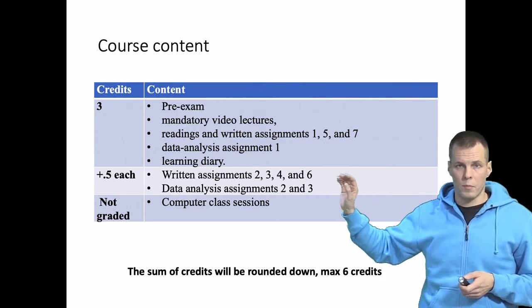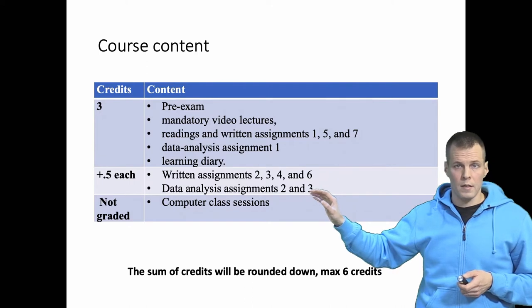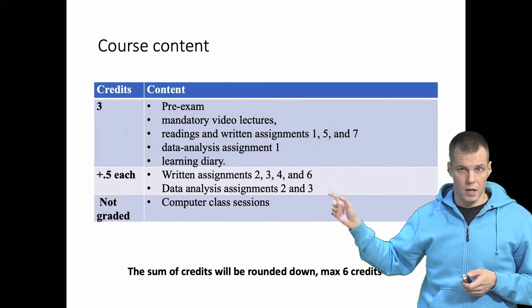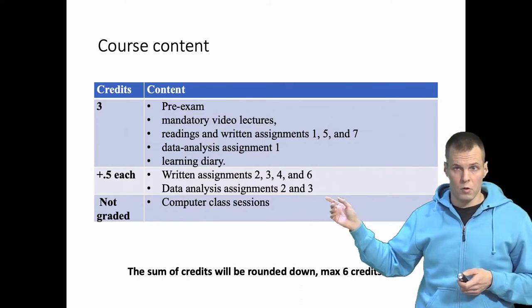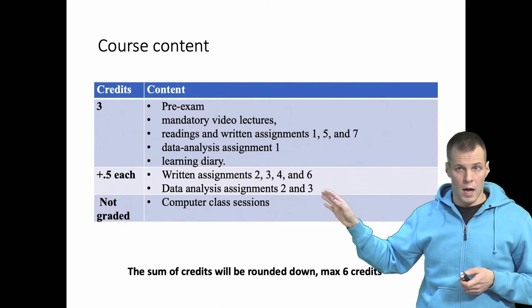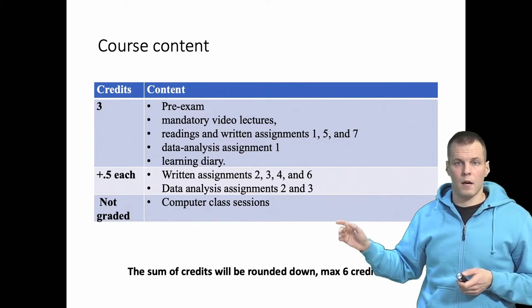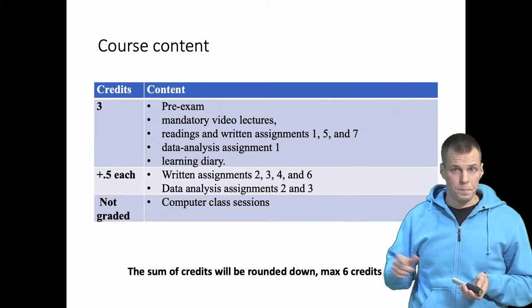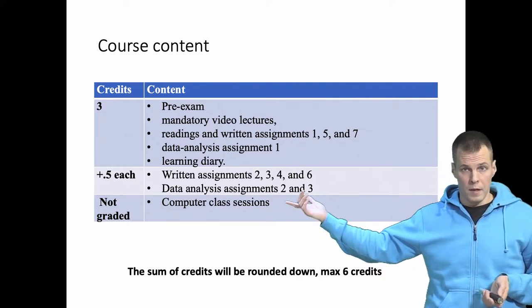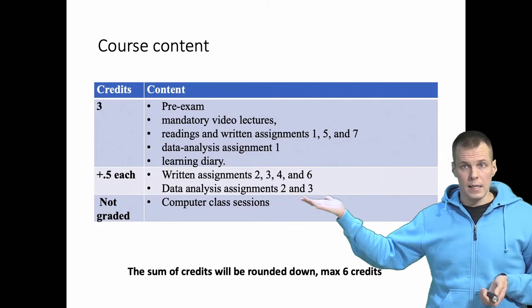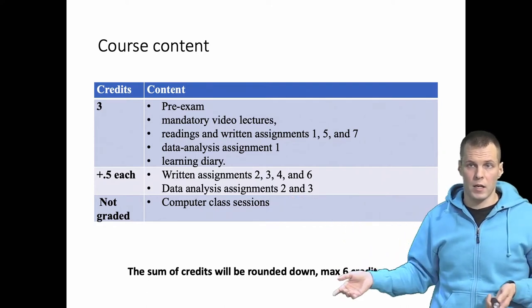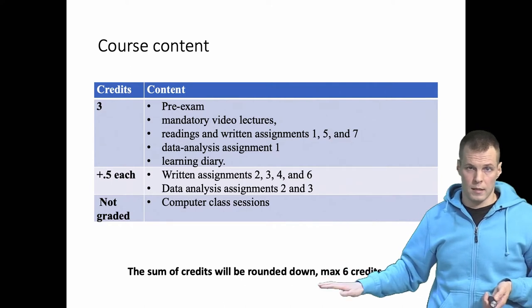Then the optional part: I have four additional written readings and written materials you can do, and two optional data analysis assignments. These give you half a credit each and the total number of credits is rounded down. So if you complete five out of the six voluntary things you will get five credits; complete all six and you get six credits.